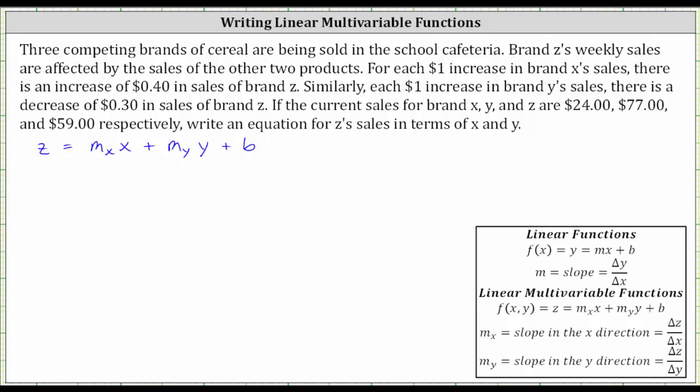Now we begin by determining the slope in the X direction and the slope in the Y direction. Going back to the given information, for each $1 increase in brand X's sales, there's an increase of 40 cents in sales of brand Z. So the ratio of the change of Z to the change in X is 40 cents to $1, which simplifies to 0.4.